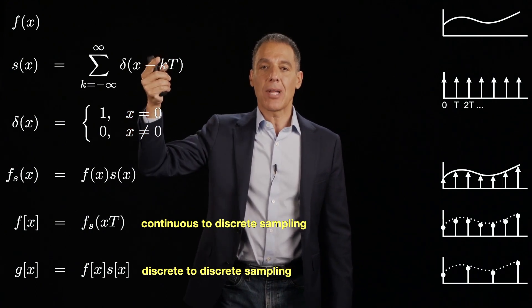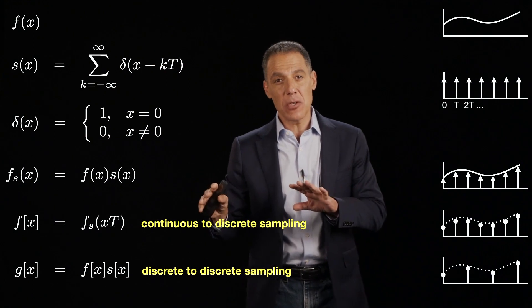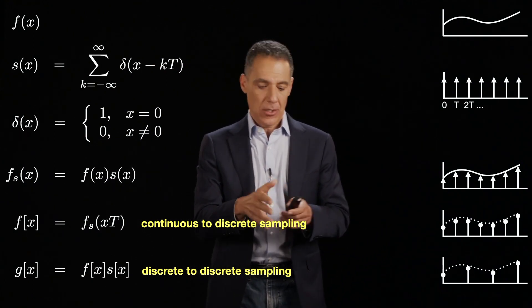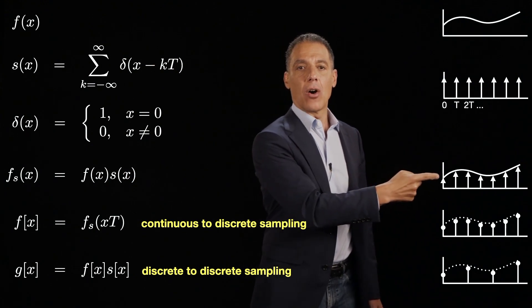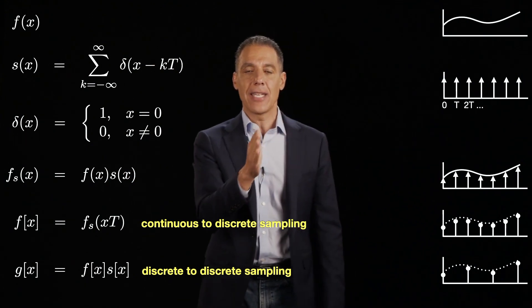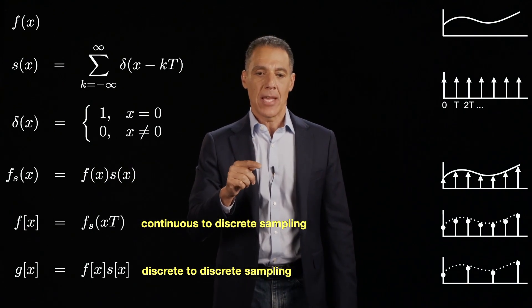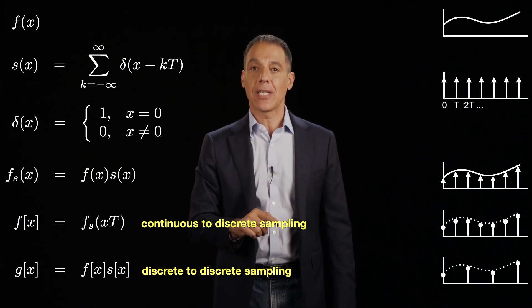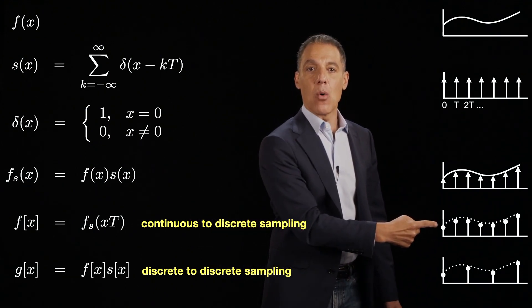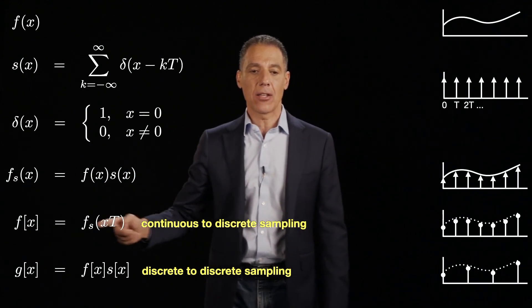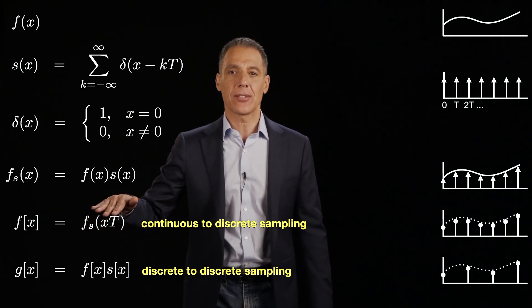Now I'm going to multiply that impulse train with my signal to give me a continuous but sampled signal. So all I've done here now is I've zeroed out all of the values that are not at integer multiples of the sampling value of T. And then finally I do a continuous to discrete sampling where I actually grab only every T-th element in the signal. So that's the recording process.